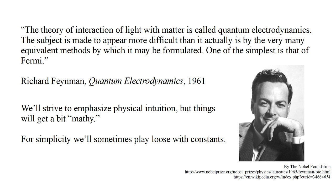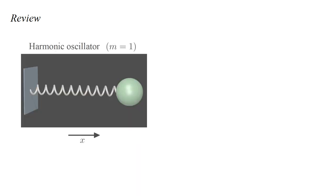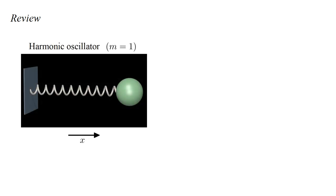For simplicity, it will sometimes play loose with constants, defining away or dropping some to keep the notation as simple as possible. Let's start with a review of essential material from videos one and two. In video one, we analyzed the harmonic oscillator system of a unit mass on a spring. X denotes the mass's position. We keep hammering on the harmonic oscillator for good reason. It's absolutely central to quantum field theory.